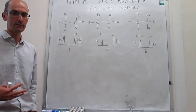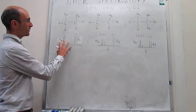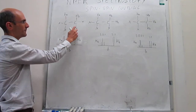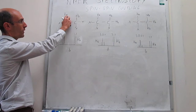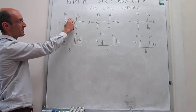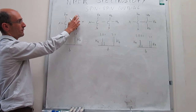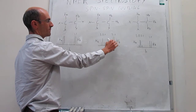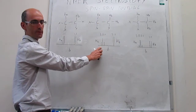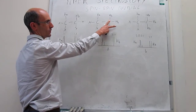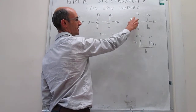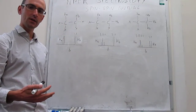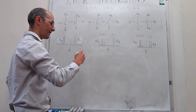Let's see if we can identify some generalities here. If we take a look at the proton NMR spectrum of this molecule, we see that Ha is split into a doublet by the action of one Hb. Here, Ha is split into a triplet by the action of two Hb's, and here Ha is split into a quartet by the action of three Hb's. So it looks like the splitting patterns follow an N plus one rule.